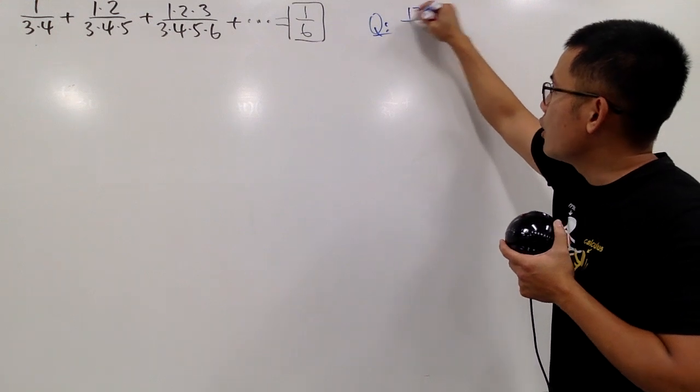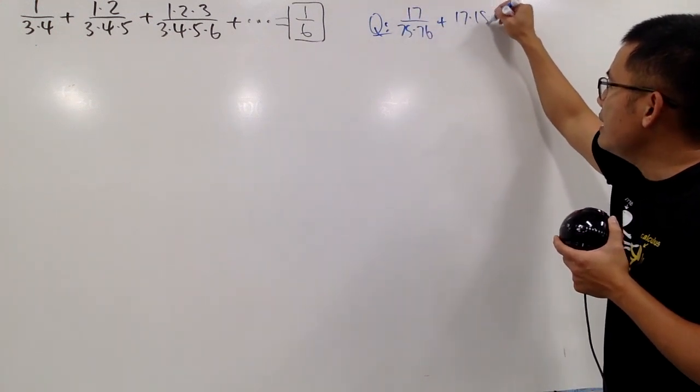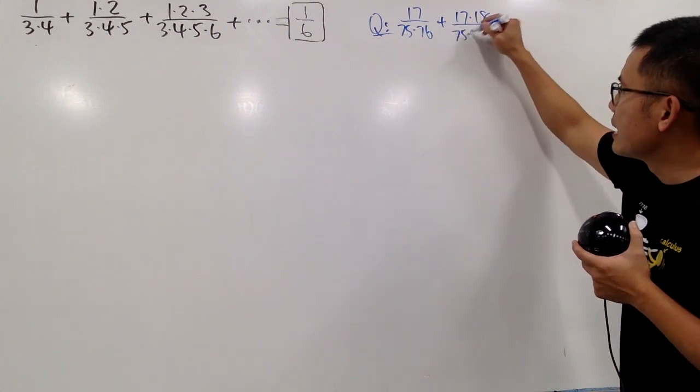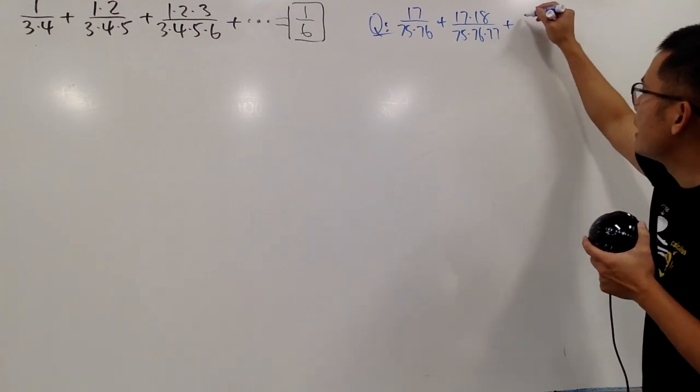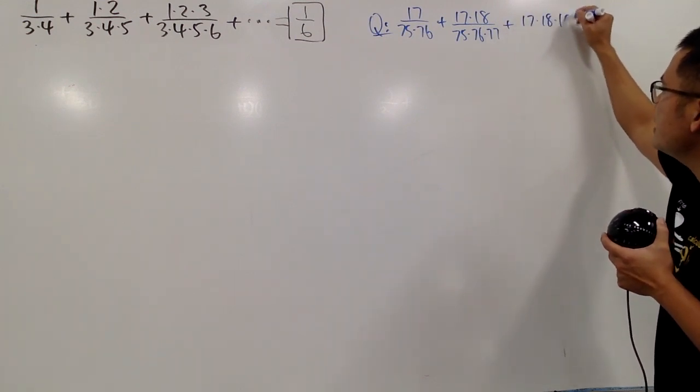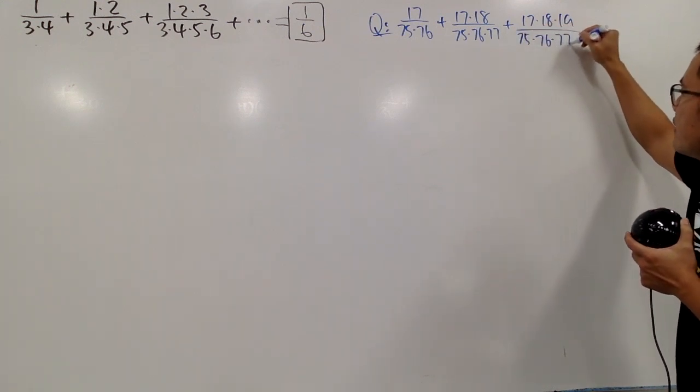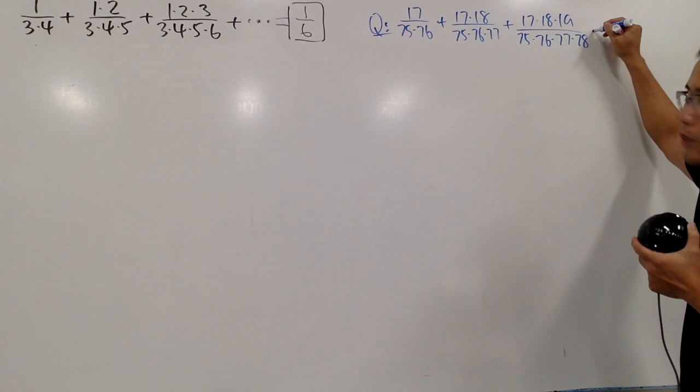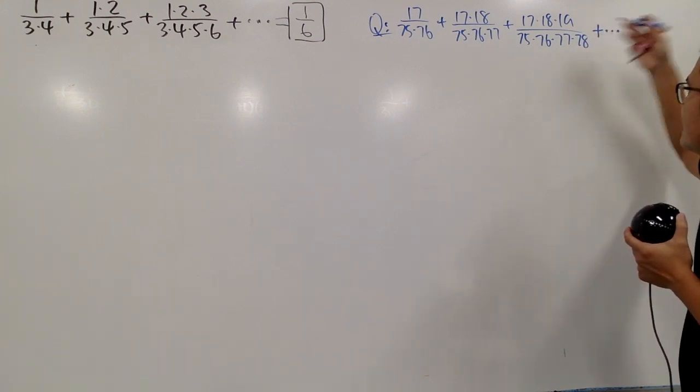We have 17 over 75 times 76 plus 17 times 18 over 75 times 76 times 77. And of course, we keep the same pattern. 17 times 18 times 19 over 75 times 76 times 77 times 78. And of course, how can we do calculators to solve the plus dot dot dot? Like this.